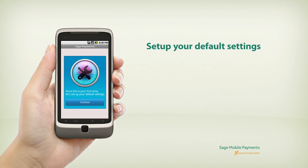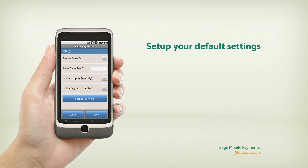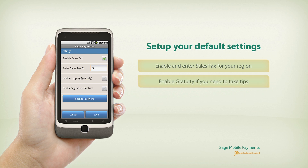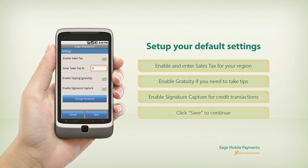Since this is your first time, we'll need to set up your default settings. First, you'll enable Sales Tax, then enter Sales Tax for your region. If you plan on taking tips, enable Gratuity. Enable Signature Capture for Credit Transactions. Click Save to continue.